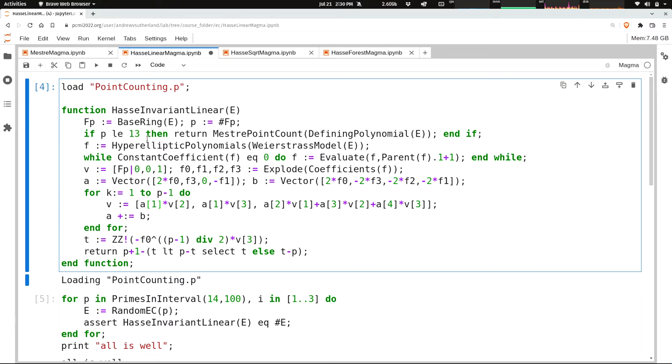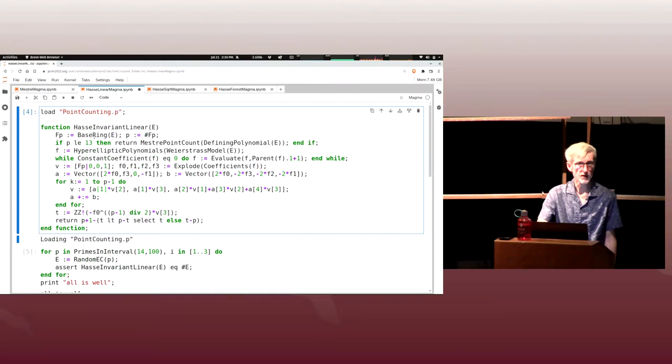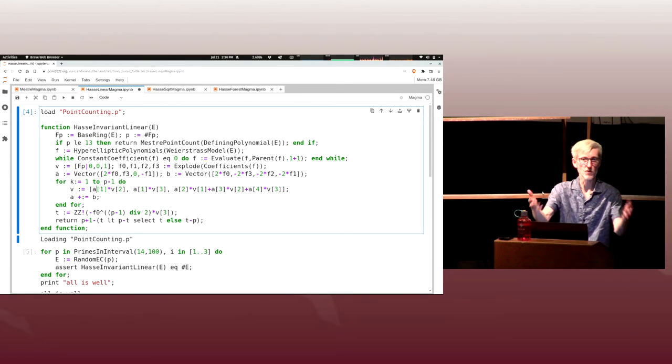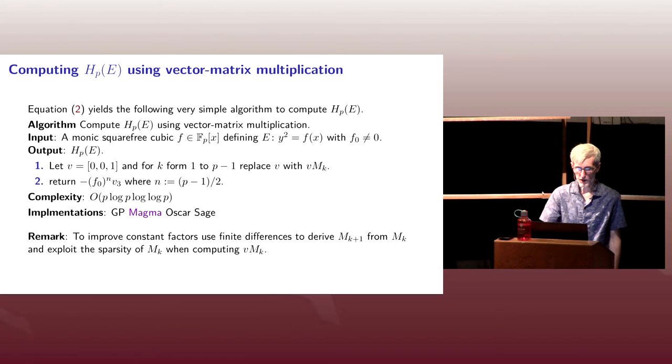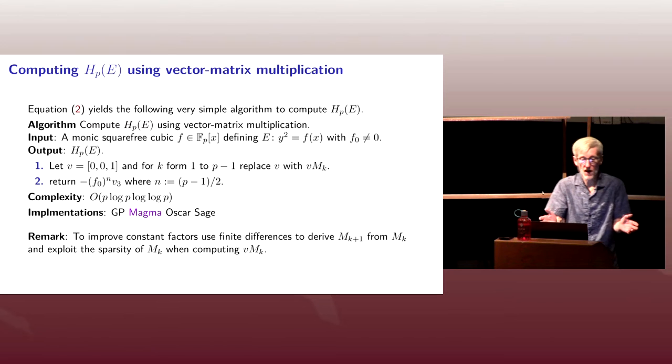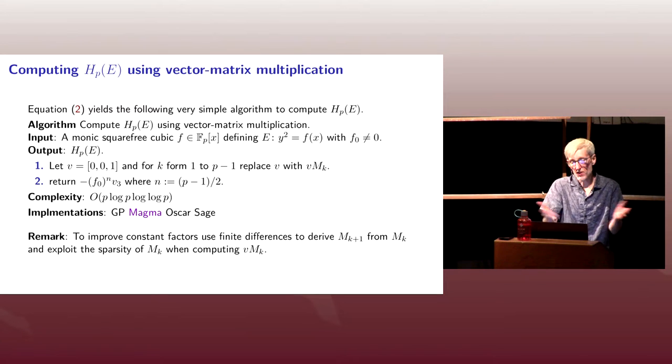Any questions on this algorithm? I could have written a two-line version of this algorithm, but I wanted to sort of give you more code examples, because I know that in the problem sessions, often you're wondering how do I do this, that, or the other thing. I'm going to give a language, and I want you to see some examples. All right. So great. We have an algorithm to compute the Hasse invariant. It runs in linear time. We already have a linear time algorithm. We already have a bunch of faster algorithms, so this isn't super exciting.